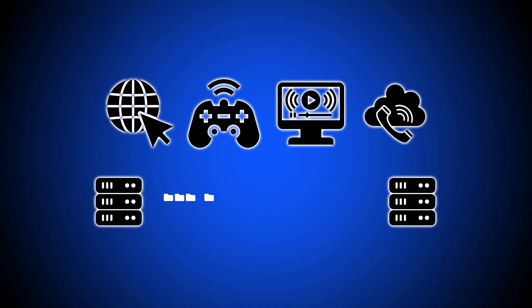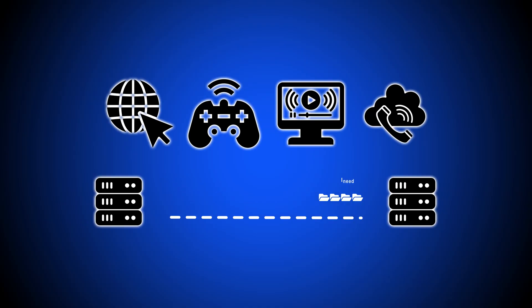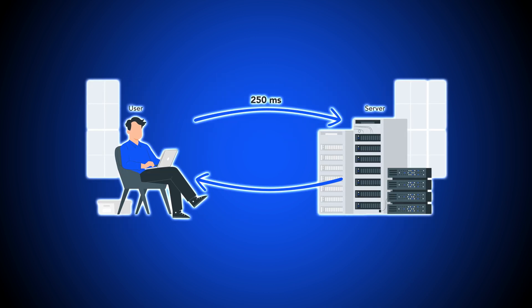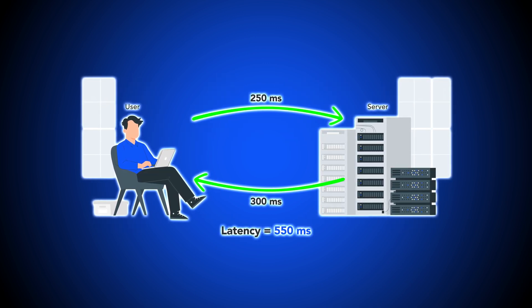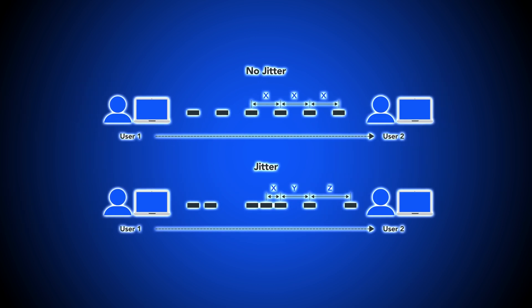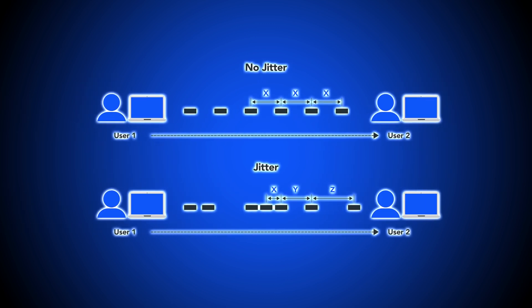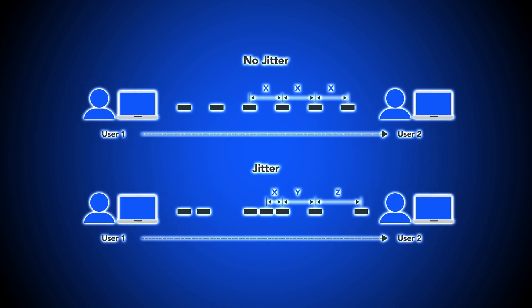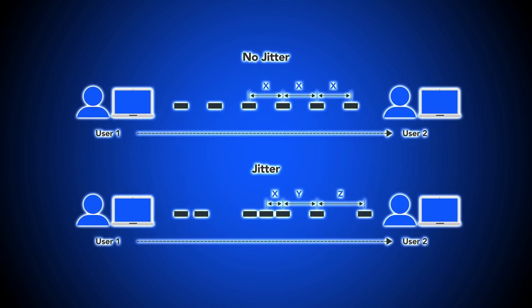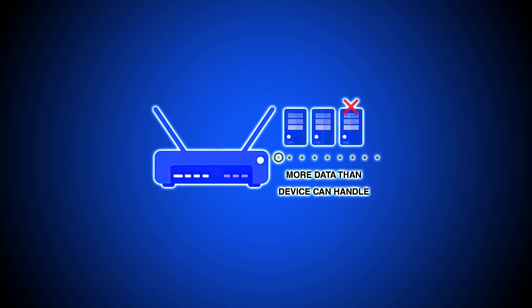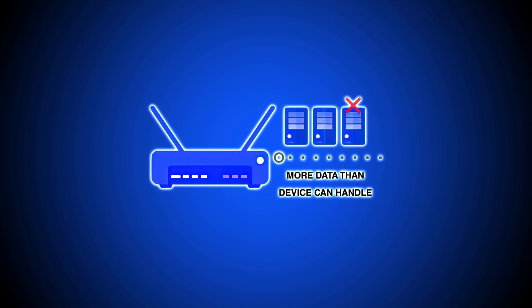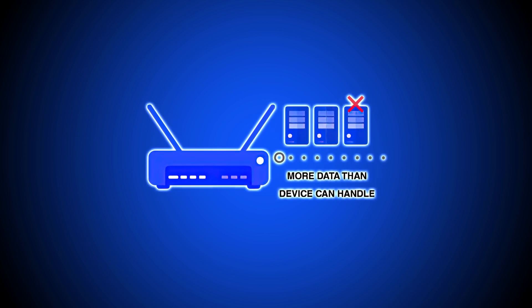Firstly, speed testing — this measures the speed of your internet connection. Second, ping tests — these measure the latency of your internet connection. Three, jitter tests — these measure the variation in latency. Number four, packet loss test — this measures the amount of voice data loss during the transmission.